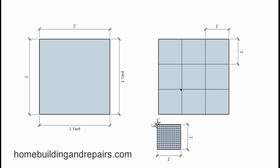Let's break square yards down into square feet and square inches. One yard is a three-foot measurement — 36 inches. If we break one square yard into square feet, we get nine squares: three times three equals nine. So one square yard contains nine one-foot-by-one-foot squares.